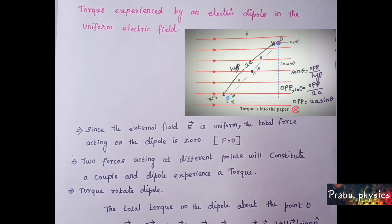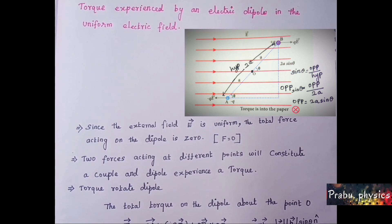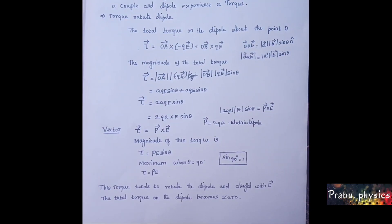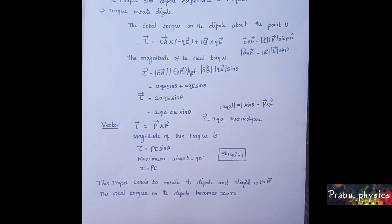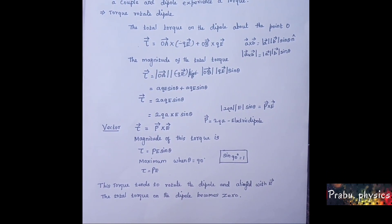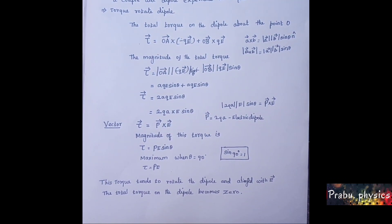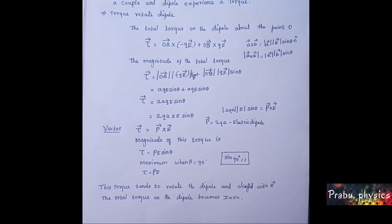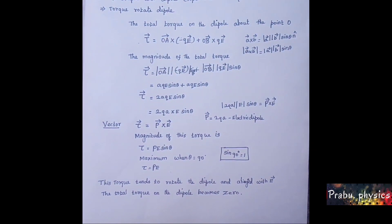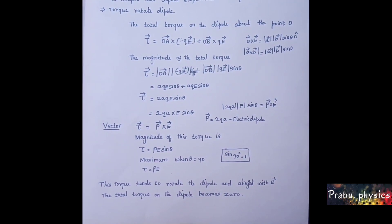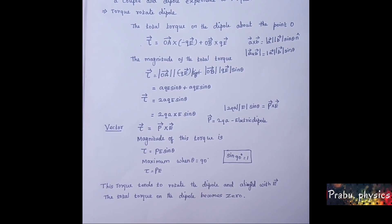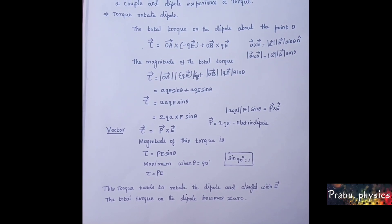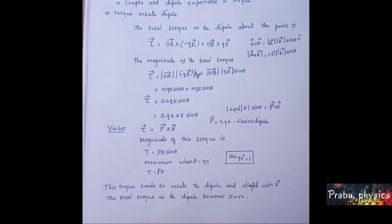The torque rotates the dipole. The total torque on the dipole about the point O: tau vector equal to OA vector into minus qE vector plus OB vector into qE vector.